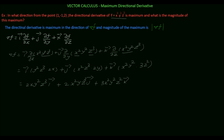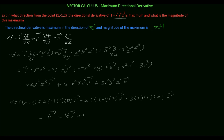We have to find del f at the point (1, -1, 2). Substituting: 2 into x=1, y=-1 so y squared=1, z=2 so z cube=8 for the i component; 2 into x squared=1, y=-1, z cube=8 for the j component; and 3 into x squared=1, y squared=1, z squared=4 for the k component. So del f equals 16 i vector minus 16 j vector plus 12 k vector.